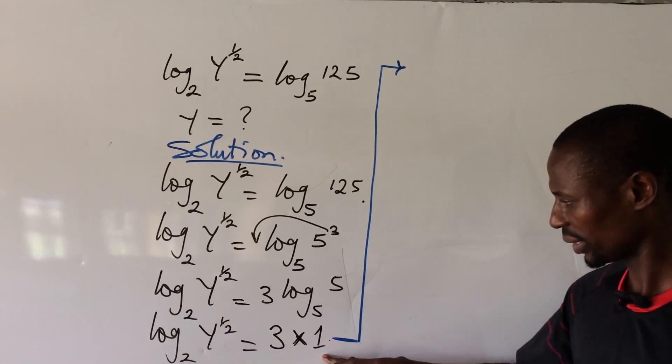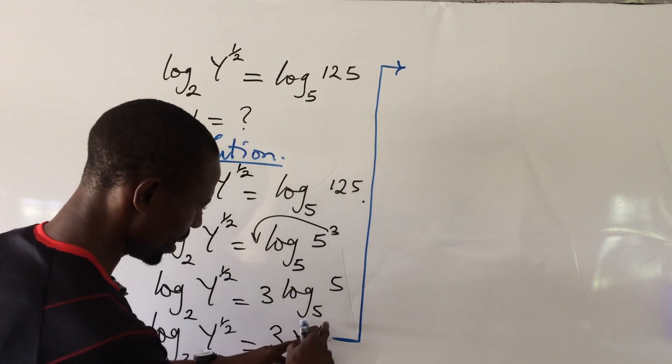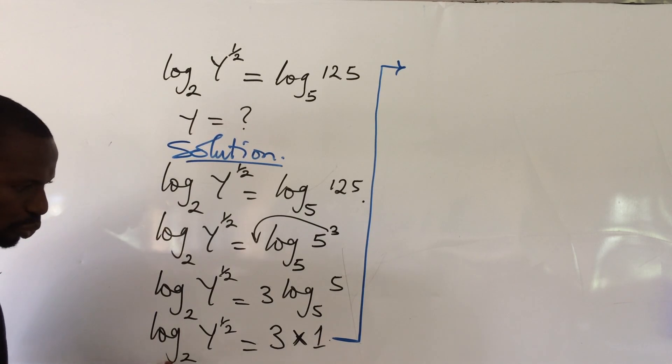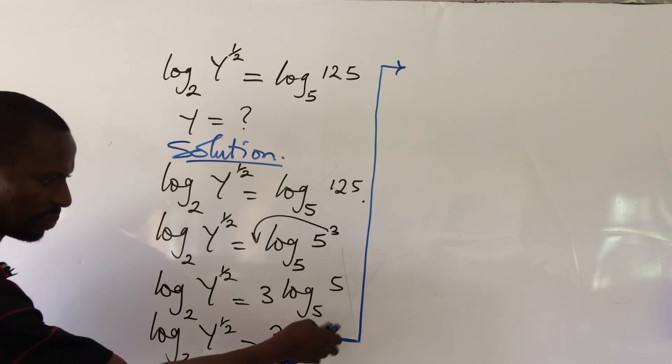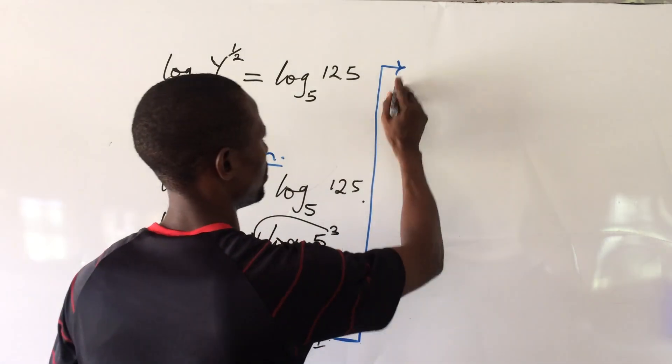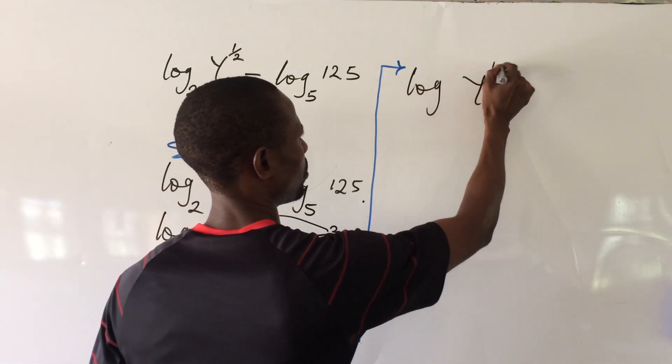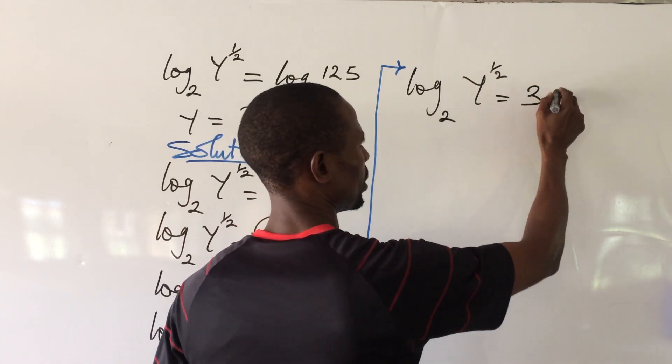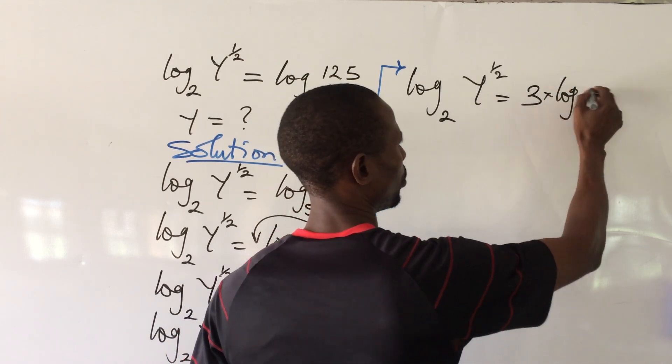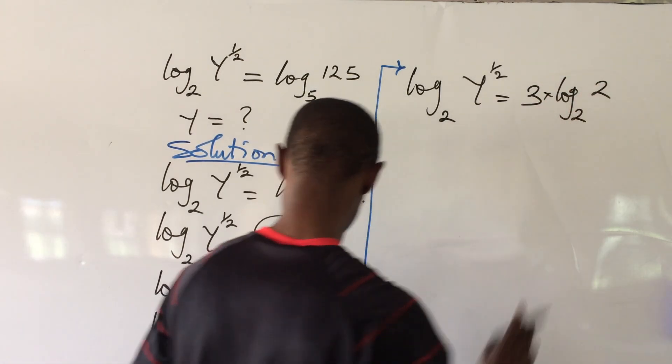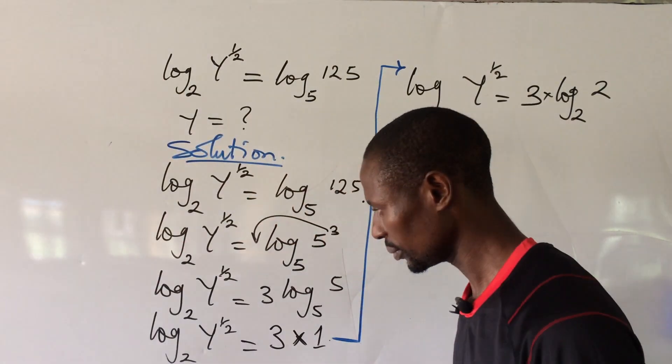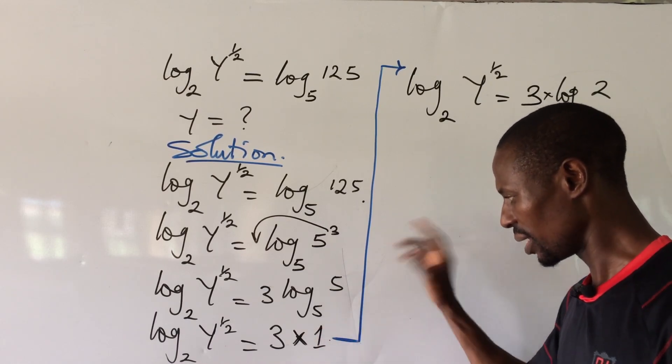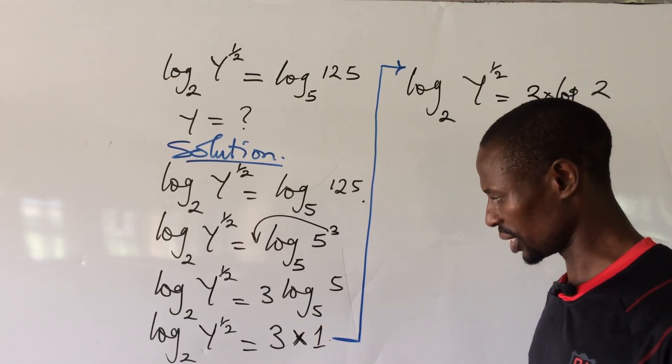Here we can bring in log 2 base 2 to take the place of the 1. So we have log y to the power of 1/2 base 2 equals 3 times log 2 base 2. I just did that because here we are having base 2, so let's introduce log 2 base 2.